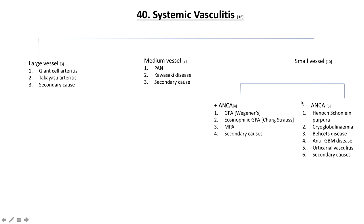ANCA-negative small vessel vasculitides include Henoch-Schönlein purpura, which can cause IgA nephropathy, cryoglobulinemia, Behçet's disease, and anti-glomerular basement membrane disease. This last one, also called Goodpasture syndrome, attacks the epithelium in both the pulmonary vasculature and the renal vasculature — we saw this in our hemoptysis algorithm.